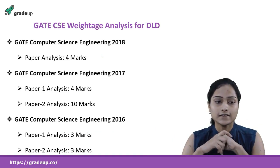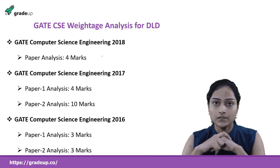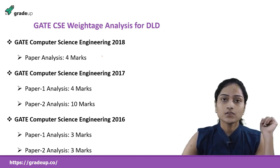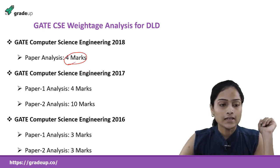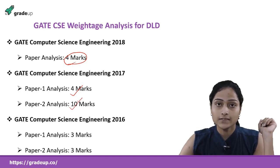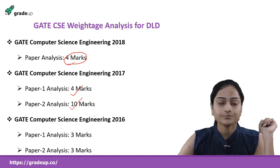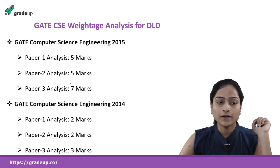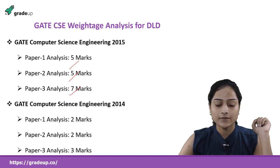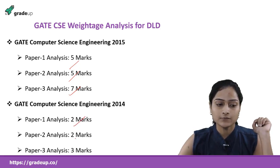The first thing we are going to discuss is the weightage analysis of DLD in the GATE examination. In GATE 2018, DLD was asked for 4 marks. In GATE 2017, in paper 1 it was asked for 4 marks and in paper 2 it was asked for around 10 marks. In 2016, in both paper 1 and paper 2 it was asked for 3 marks. In GATE 2015, in paper 1 and paper 2 it was asked for 5 marks and in paper 3 for 7 marks. In GATE 2014, it was asked for 2 marks in both paper 1 and paper 2, and in paper 3 it was asked for 3 marks.